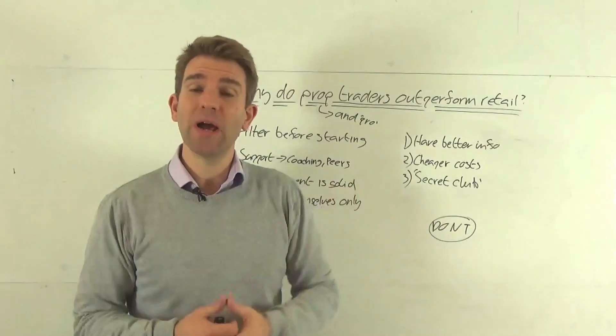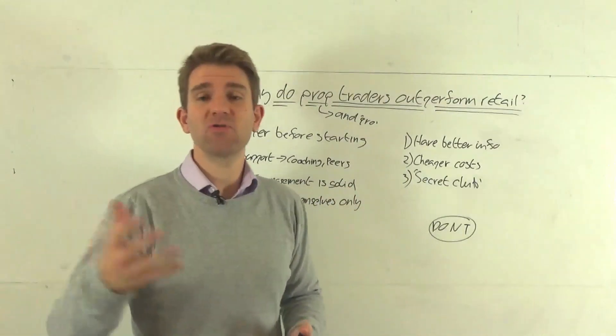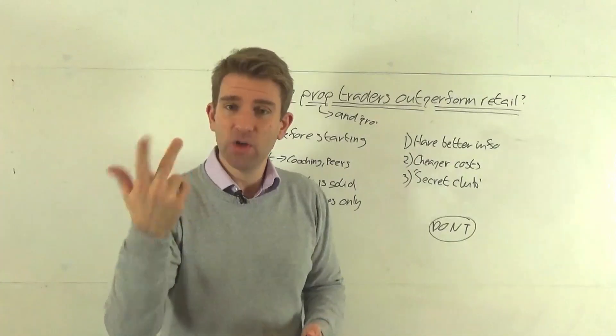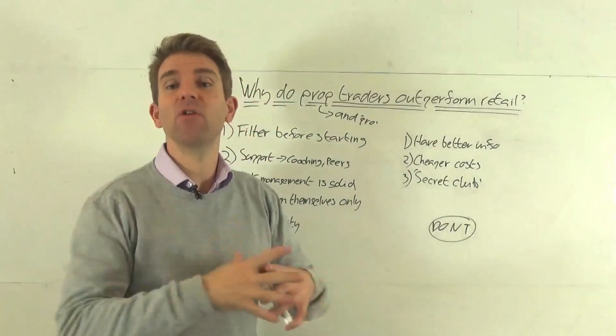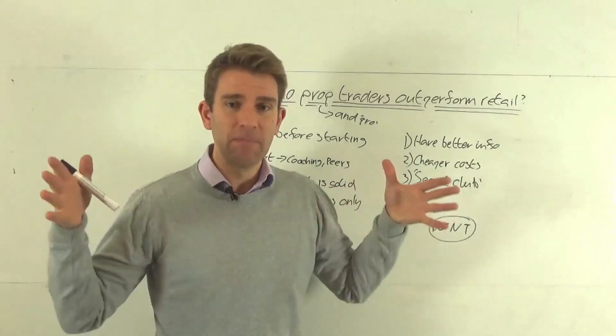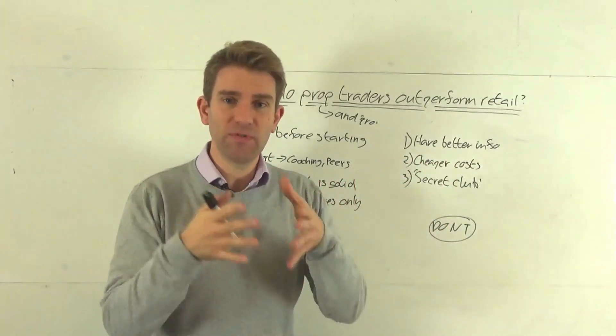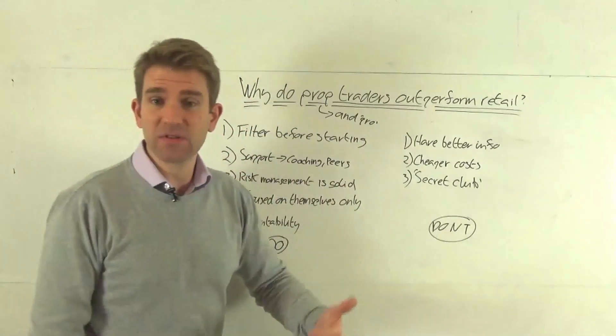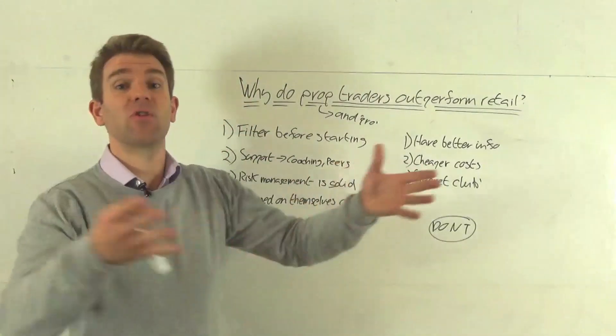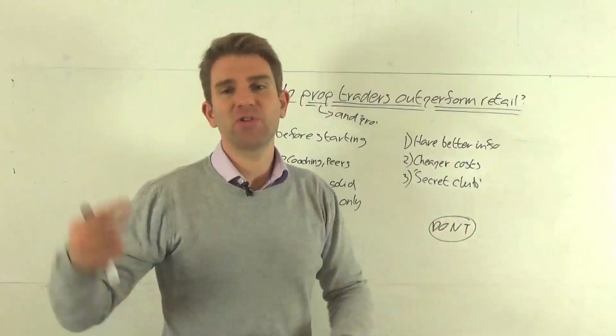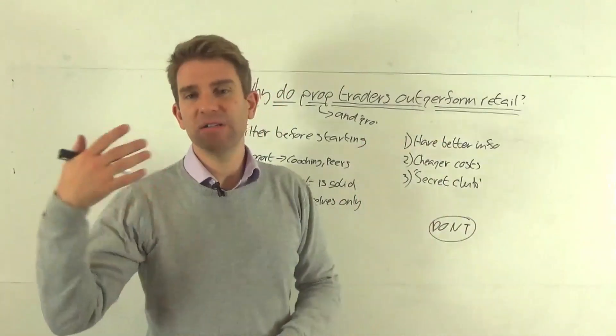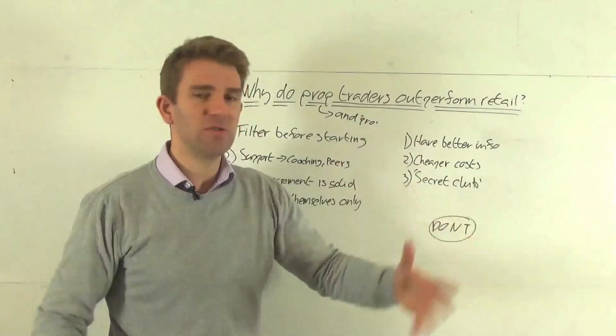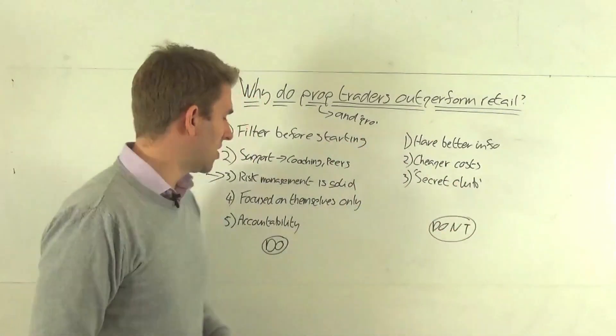So there's accountability that you don't have as a retail trader because you roll up as a retail trader, you can do what you want, when you want, you can trade what you want, you can trade the size you want, you can trade however you want. There are no boundaries. And we have to imply those boundaries, we have to force those boundaries on us so that we've got a chance of being focused on what we want. And that's another major reason that retail traders fail is they're looking at everything. They're trading different strategies, different markets, different sizes, different times.